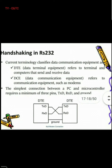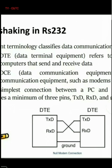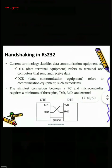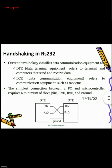Whenever information is transferred from computer to microcontroller, the TXD pin of the computer gets activated for transmission. The microcontroller's RXD pin receives this data. Similarly, if the microcontroller wants to send data to the computer, the TXD pin of the controller activates and the RXD pin of the computer receives. This is simple communication using the RS-232 standard.